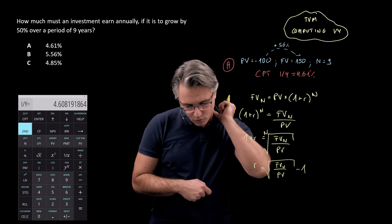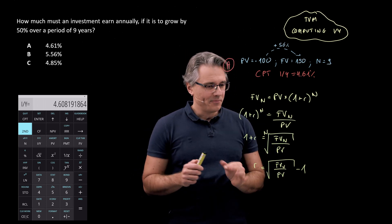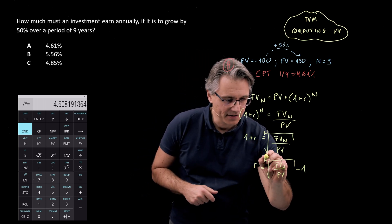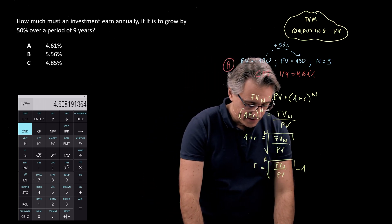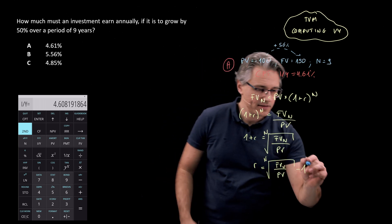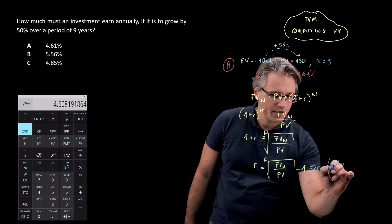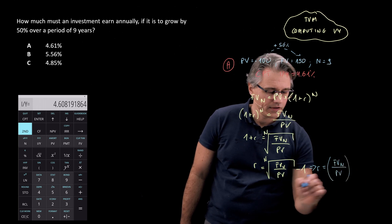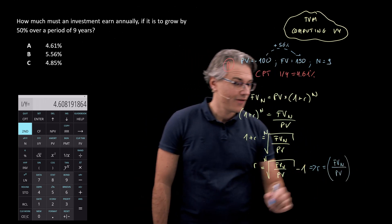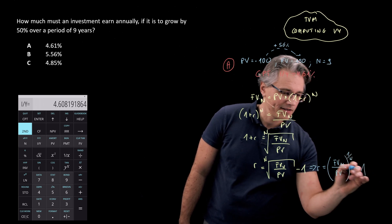And what you could do here is also write this in a slightly different way. I'm missing the N here. What we could write this as, and this is going to be easy to put into our calculators, is R equals FVN divided by PV to the power of one over N minus one.